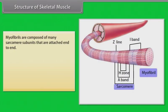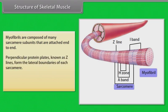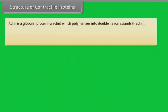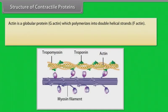Myofibrils are composed of many sarcomere subunits that are attached end to end. Perpendicular protein plates known as Z-lines form the lateral boundaries of each sarcomere. A middle region of each sarcomere called the H-zone only contains myosin.